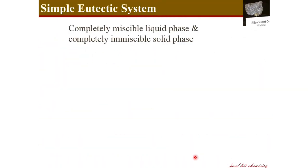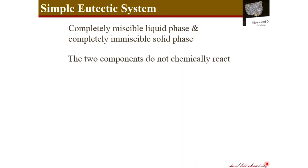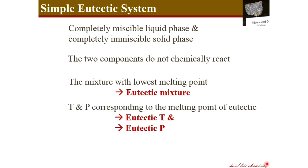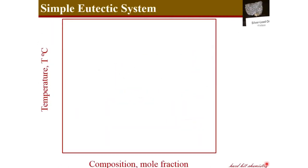Coming to simple eutectic systems: as we have seen, the components are completely miscible in the liquid phase and immiscible in the solid phase, and the two components do not react chemically. A particular composition possesses the lowest melting point — that mixture corresponds to the eutectic mixture. The respective temperature is called the eutectic temperature, and as assumed here, pressure is insignificant.